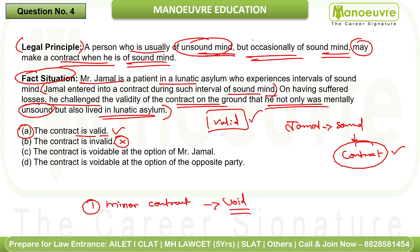The contract is valid — it is not invalid, because the principle says he 'may' make a contract when of sound mind. Option C says the contract is voidable at the option of Mr. Jamal — no. Option D says voidable at the option of the opposite party — in this case, Jamal is the one challenging, not the opposite party, who has no reason to void it. Option A — the contract is valid — is the correct answer.